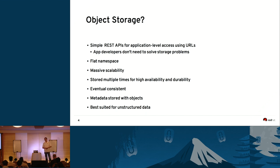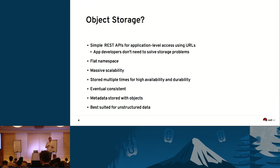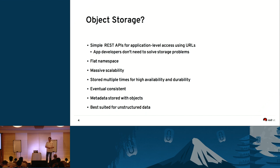Object storage makes it possible to scale the whole system very massively. With a traditional file system it gets really complicated if you want to go beyond a single node — you need a distributed file system, which is very complicated. As an application developer, you don't need to think about scaling up your application because the URL stays the same. You don't need to care about where you read the data from. Most object storages also store each object multiple times — three copies is most commonly used.